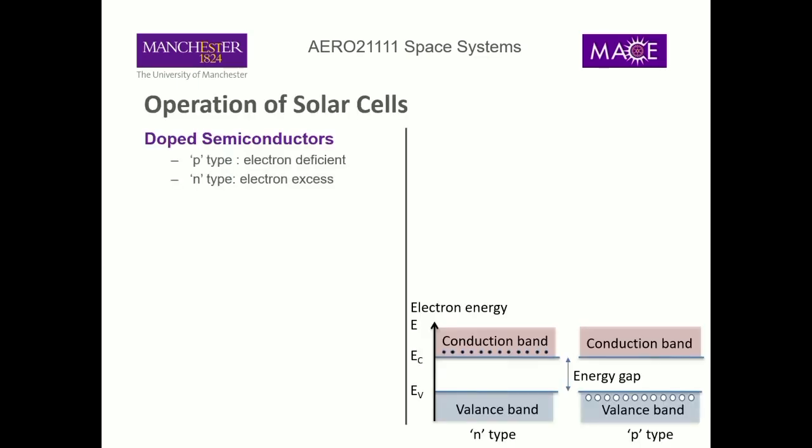How do solar arrays work? Solar arrays use semiconductors. Silicon in its pure form is an insulator, so you need to do something to it — we call it doping, which means adding a chemical into the structure of the silicon — in order to free an electron or create an electron hole.